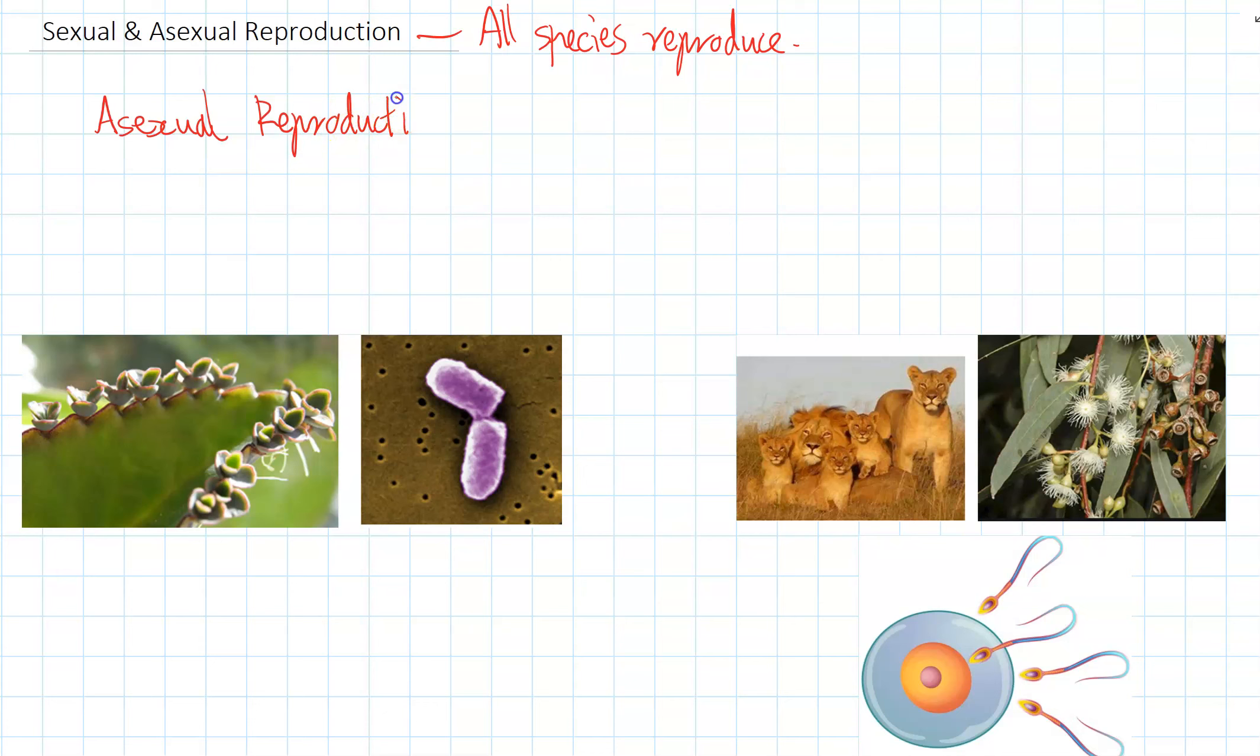So asexual reproduction we'll look at first because it's the most simple one. And what asexual reproduction is, really simply, it's just cloning.